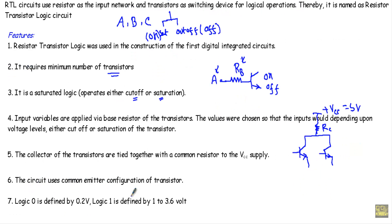Sixth, the circuit uses the common emitter configuration of the transistor. A transistor has three types of configurations: common base, common emitter, and common collector. The RTL logic circuits use the common emitter configuration.